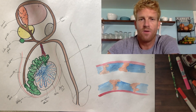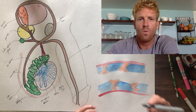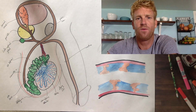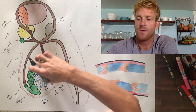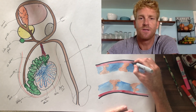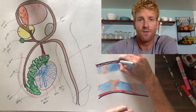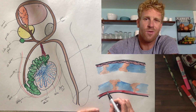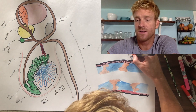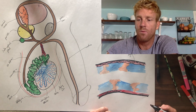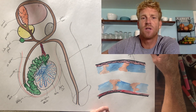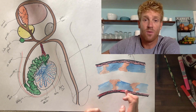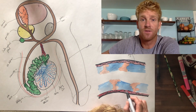One thing you'll notice is that the outer wall of the tube is composed of a special cell that I've drawn in red called myoid cells. These are smooth muscle cells, about three to four cell layers thick. What they do is contract and produce a slow movement of current that propels the sperm throughout the seminiferous tubule.